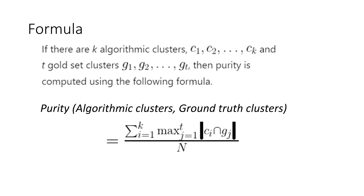A higher purity indicates that the algorithmic clusters closely match the gold standard clusters — most elements in each algorithmic cluster belong to one ground truth cluster, making them purer. A lower purity indicates that algorithmic clusters match with multiple ground truth clusters and are hence less pure. In essence, purity tells us the proportion of correctly grouped data points in the algorithmic clustering with respect to the ideal grouping represented by the gold standard.